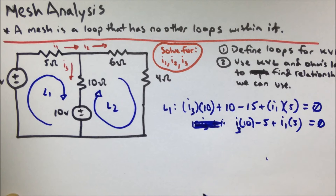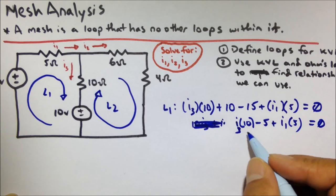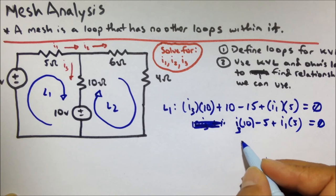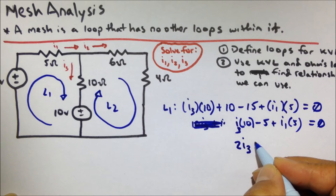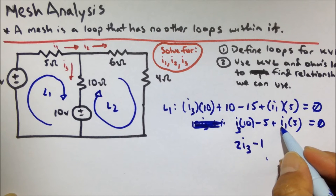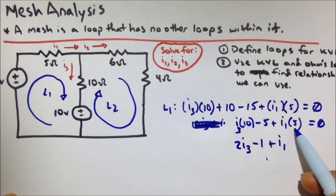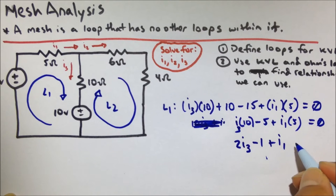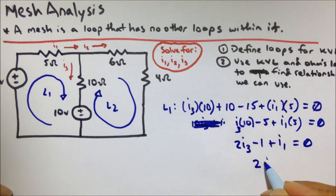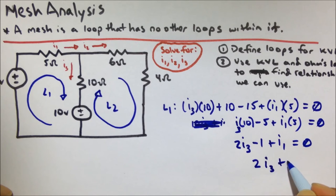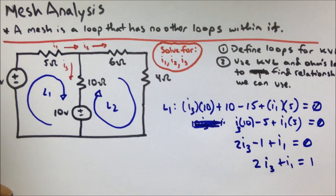Look, there's a common factor of 5 amongst all three terms, so let's divide everything by 5. We get 2 times I3 minus 1 plus I1 equals 0. Let's put the 1 on the other side: 2 times I3 plus I1 equals 1. So there's a relationship between those two currents.